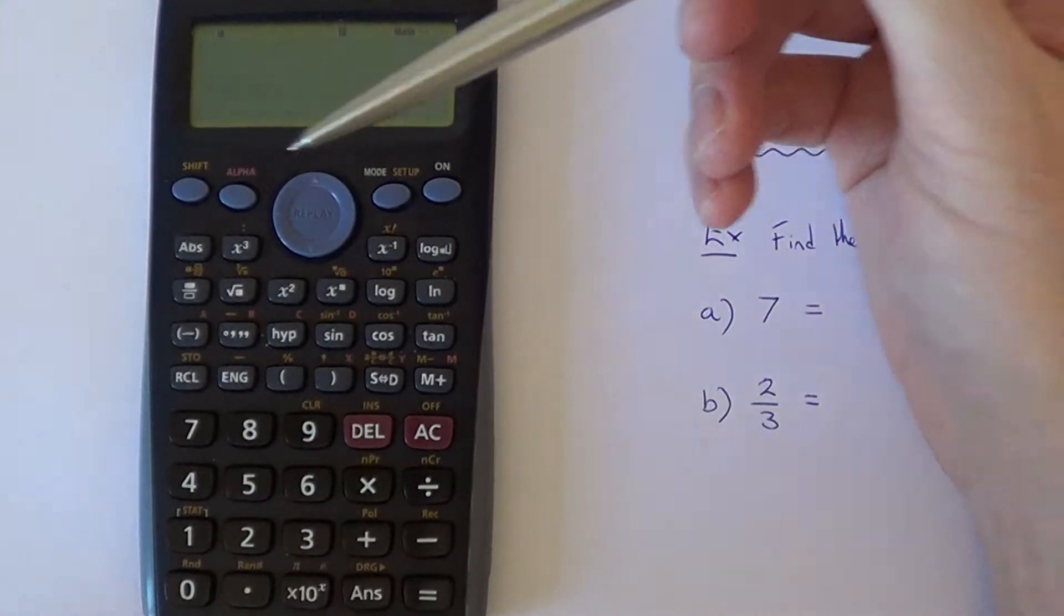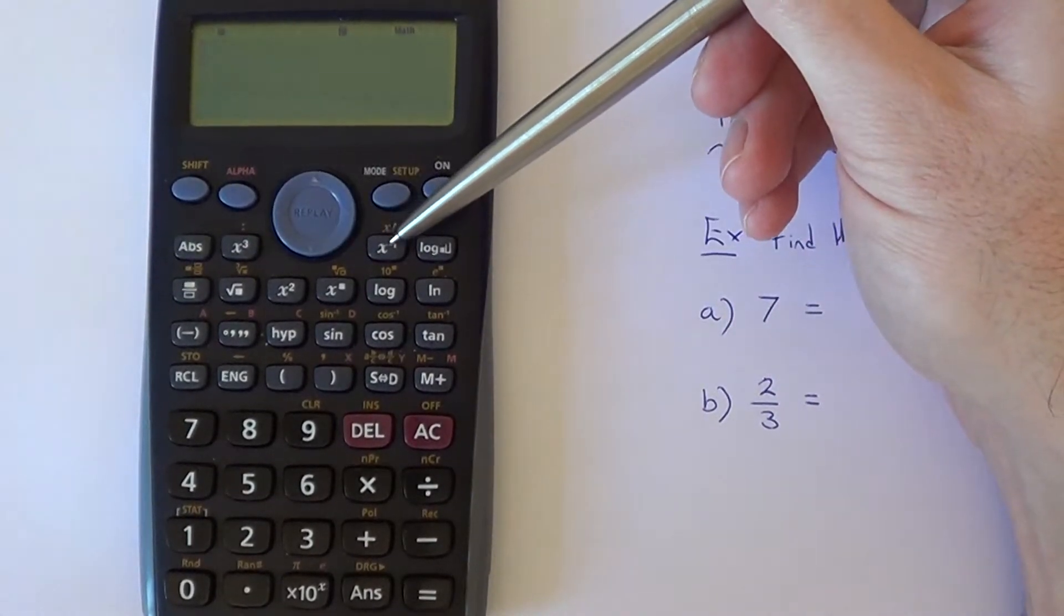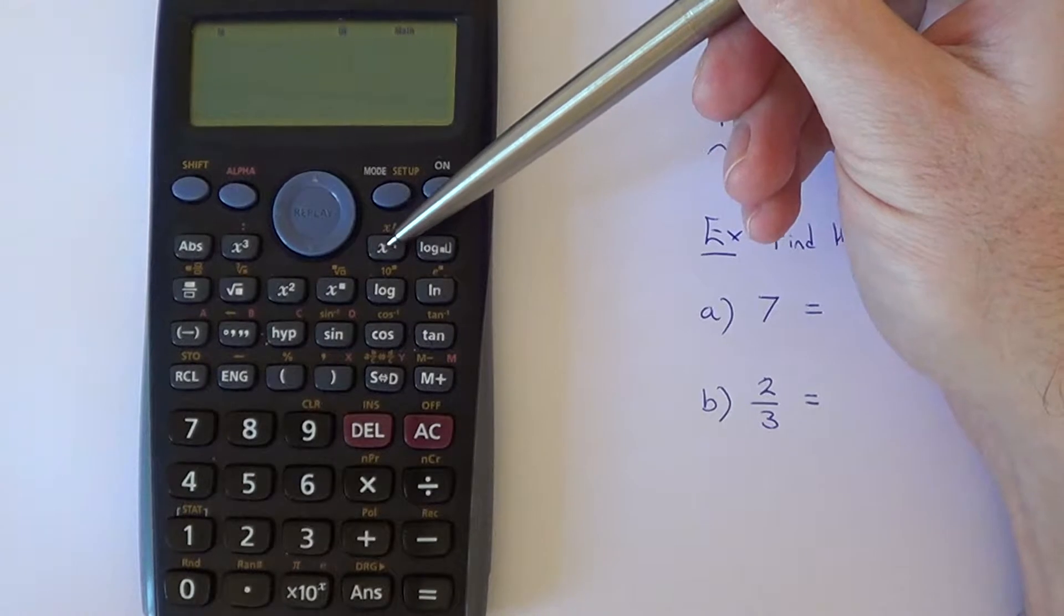You'll find this on the first row and it is the third key going across. This one here.